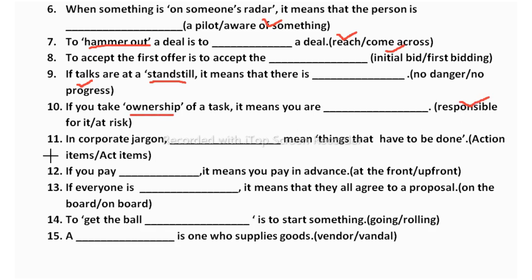Incorporate jargon: blank means things that have to be done — action items or act items. Act items is not suitable. Action items is the correct answer.